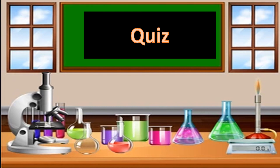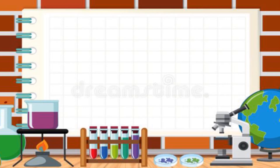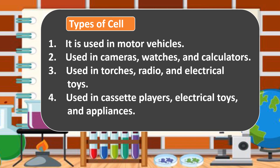Let's have a short quiz. Write all your answers in the comment section together with your name. Number one: it is used in motor vehicles. Number two: a type of cell used in cameras, watches, and calculators. Number three: it is used in torches, flashlights, radio, and electrical toys. Number four: it is used in cassette players, electrical toys, and appliances.